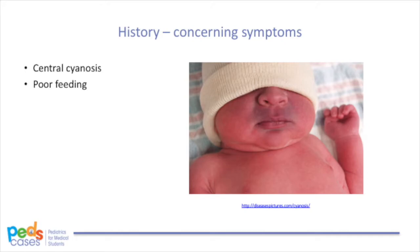Central cyanosis is concerning, as it suggests that deoxygenated blood is being pumped from the heart into circulation — somehow, the blood is not getting fully oxygenated in the lungs. Feeding problems in an infant should also raise alarm, particularly if there is a history of prolonged feeding, diaphoresis while feeding, or an infant needing to stop frequently to catch their breath while feeding. These may be indicative of congestive heart failure with pulmonary over-circulation, leading to shortness of breath and tachypnea, or could be associated with lower oxygen saturation and therefore reduced exercise tolerance. It is useful to think about feeding as an infant's form of exercise.